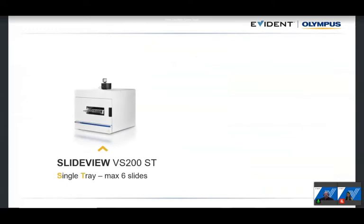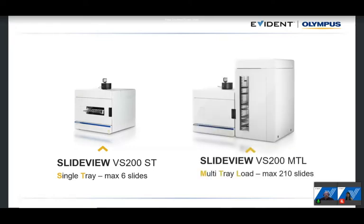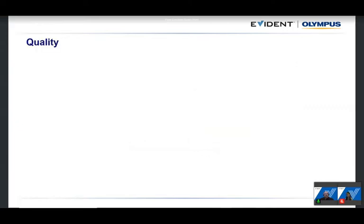The VS200 is Olympus's research slide scanner, available in two models. The VS200 ST is a single-tray model that can load a maximum of six standard slides. We also have a system with an auto-loading mechanism that holds up to 210 standard slides.